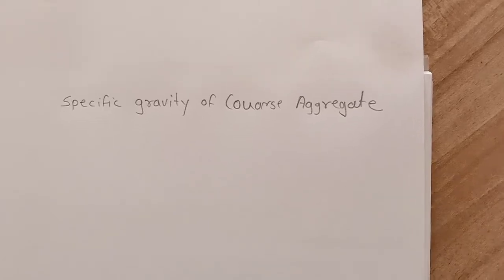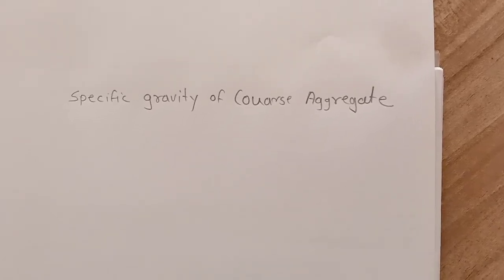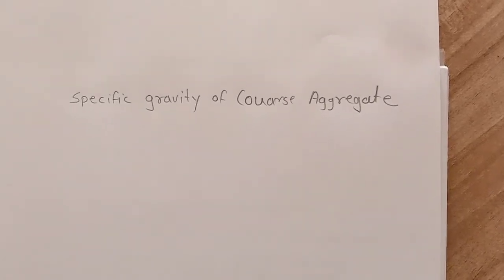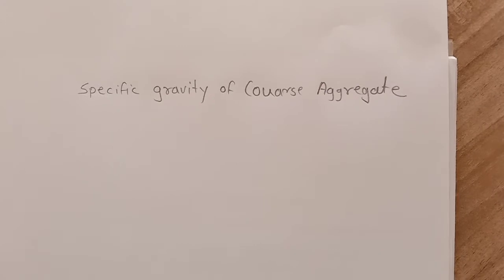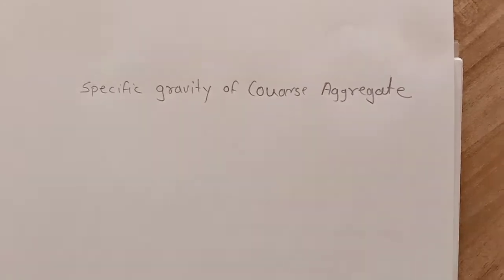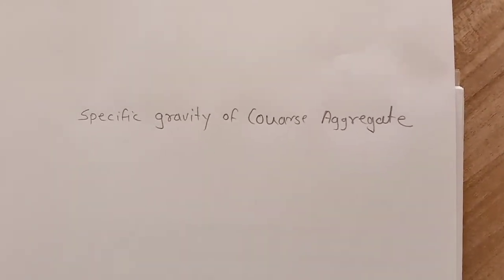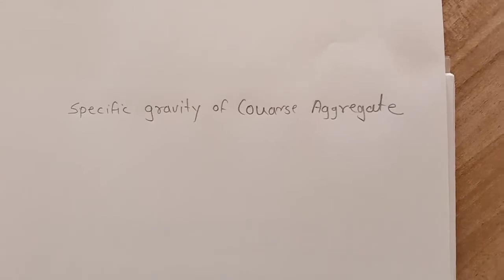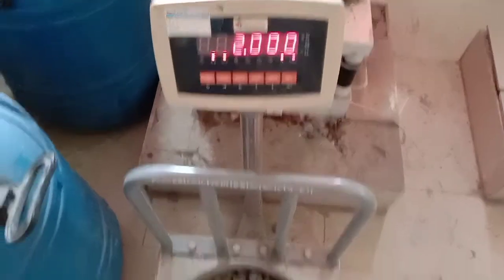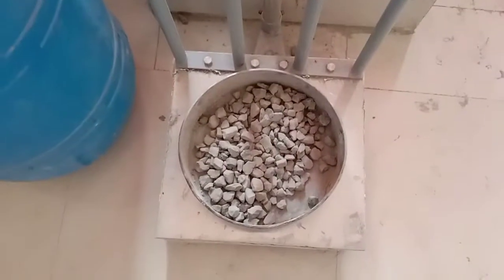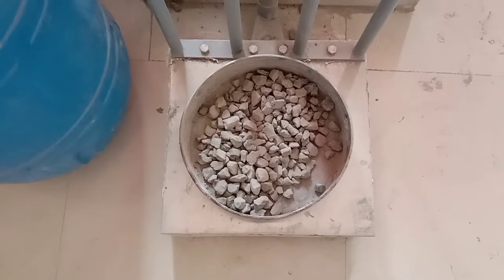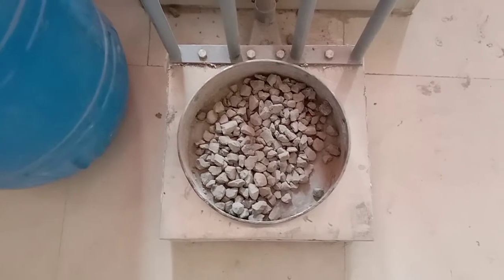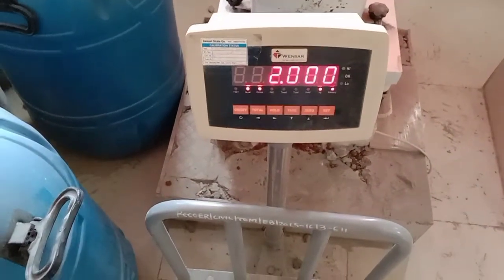Hello students, today we are going to perform a practical to calculate the specific gravity of coarse aggregate. For that we require a coarse aggregate sample, it should not be less than 2 kg. Here we have taken the sample of coarse aggregate whose specific gravity we want to calculate. The weight is 2 kg.